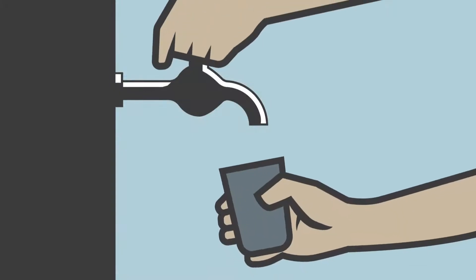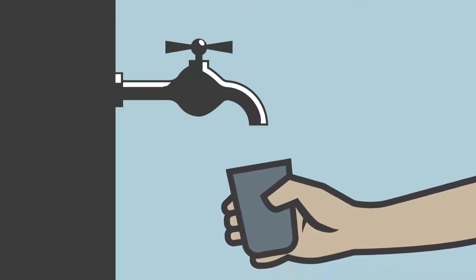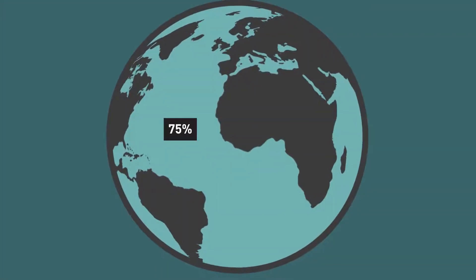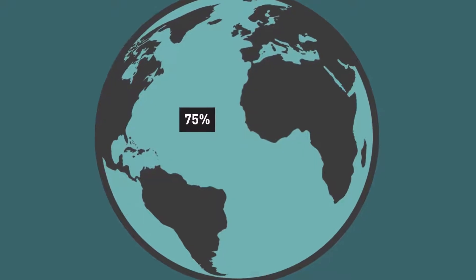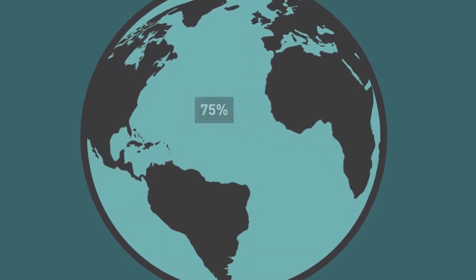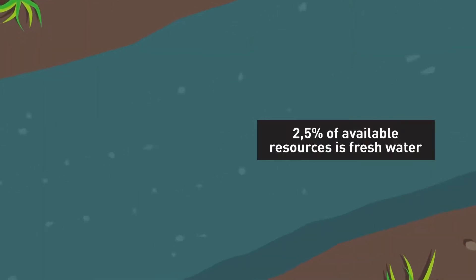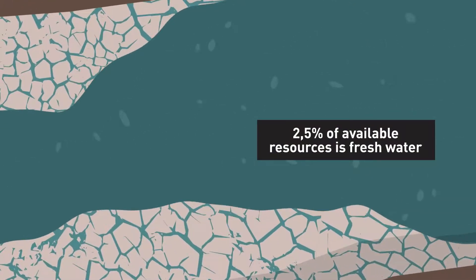There is a shortage of fresh drinking water in many parts of the world. Even though 75% of Earth's surface is covered in water, most of it is salt water. Only 2.5% of available resources is fresh water.